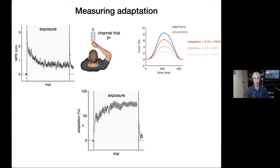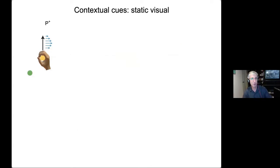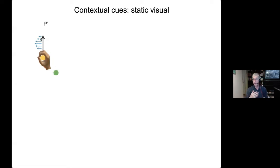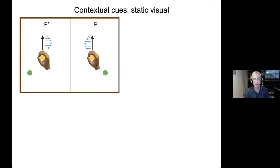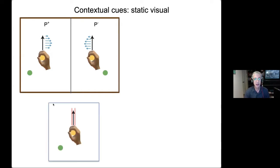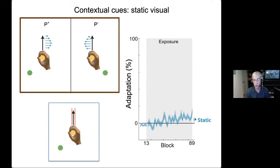We're going to focus on this sort of adaptation. Let me describe a couple of experiments using these paradigms, really to ask the question: how do you learn two different force fields at the same time? We have participants reach to a target under P plus, and on other trials they get P minus. We randomly interleave these two force fields, and a light tells them which they're going to get. If we look at learning over the course of an hour, we effectively get no learning at all — participants can't learn to switch between these two force fields based on a static visual cue.